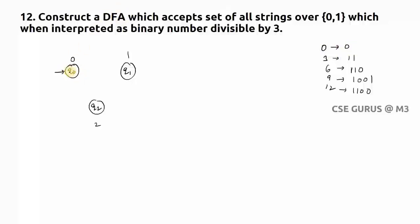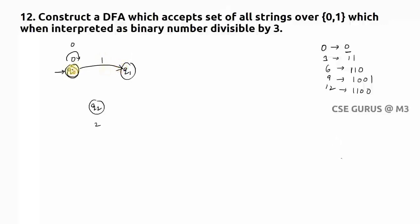Since this is a DFA, every state must have exactly one transition for each input symbol. From q0, on input 0: the string '0' is divisible by 3, so it goes to the 0-remainder state, which is q0 (self-loop). From q0, on input 1: the string '1' has remainder 1, so it goes to q1.